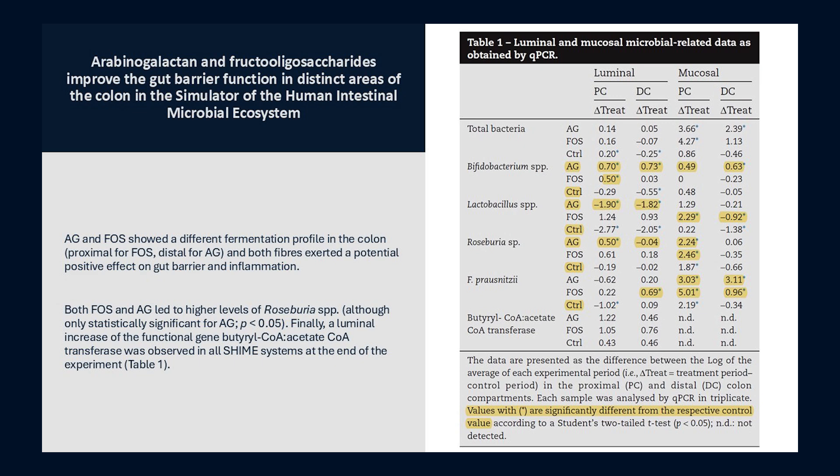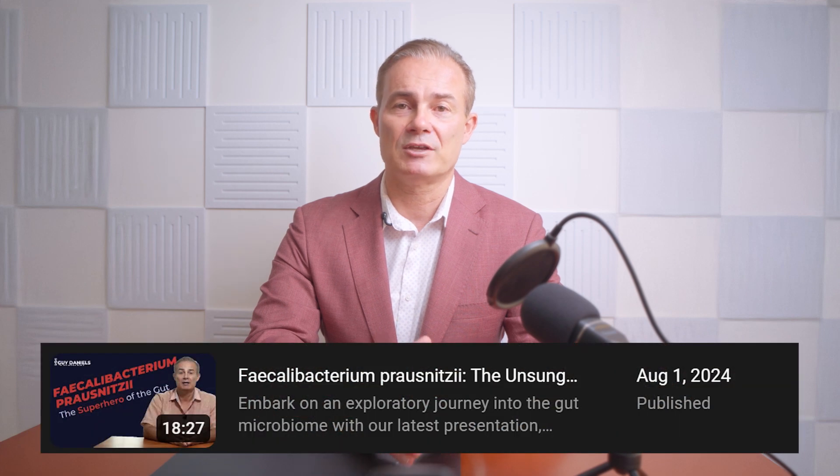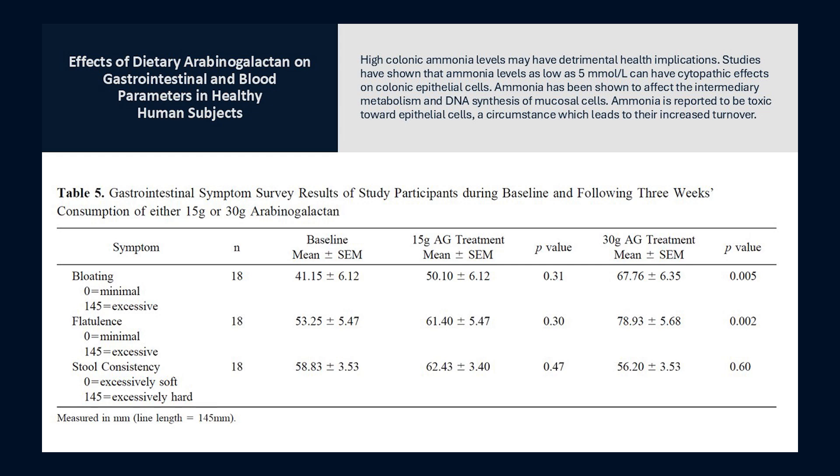In this study, arabinogalactan was compared to FOS. FOS fermented more quickly, while arabinogalactan, as a complex molecule, fermented more slowly. Both significantly increased Bifidobacterium as well as the superhero of the gut, F. prausnitzii. However, only arabinogalactan was able to significantly increase the amazingly beneficial genus Roseburia.